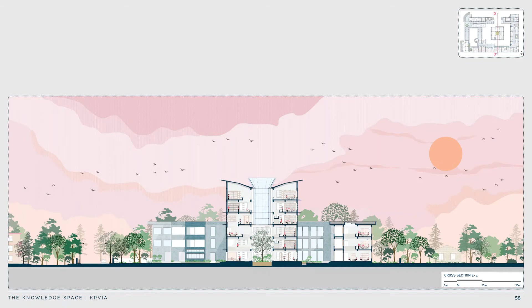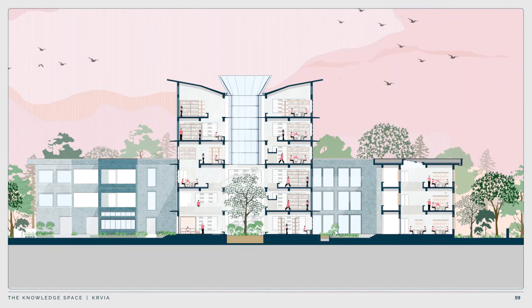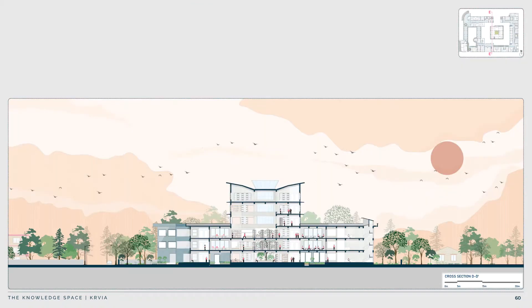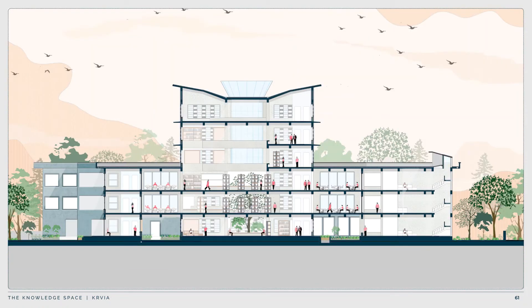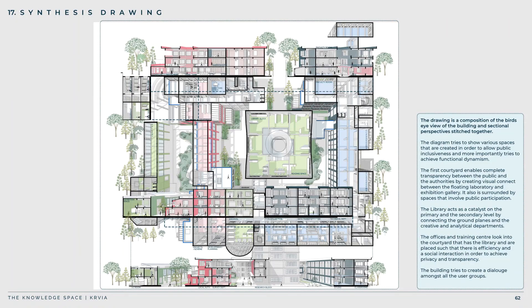Section BB also shows the varying floor plates of the library block and studios connecting to the training institute on the right. Cross section EE looking westward shows the entry from the north gate directly into the library's courtyard with a glass skylight, and shows vertical interactive spaces in the library. It cuts into the data acquisition center, showing the workplace and the double-height space with a retractable roof. Cross section DD is cut through the intersection of the research unit and the library block, connecting the data bank and think tank unit with the Survey of India unit, showing vertical interactive spaces in the library.